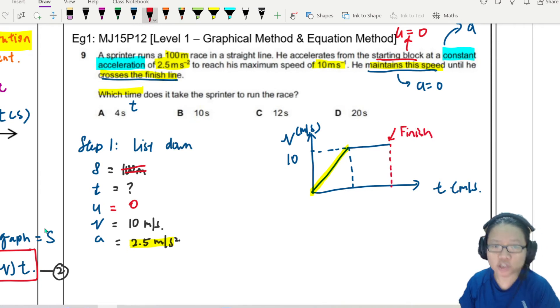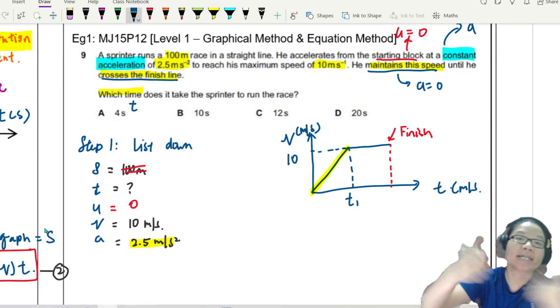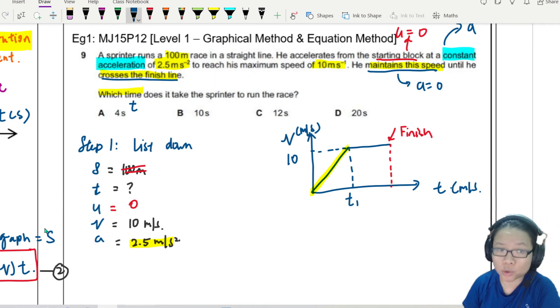So for the first stage, the acceleration is constant. The displacement is not 100 because he hasn't finished the race yet. So let's say I want to find, maybe I find T1 now. Then I can add that to T2.